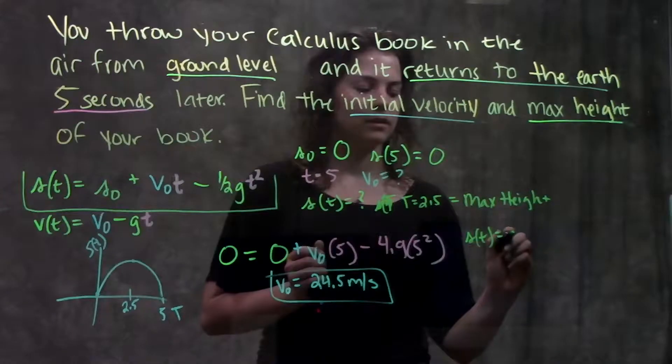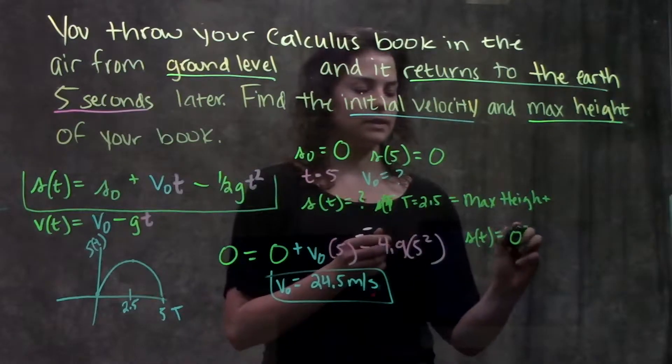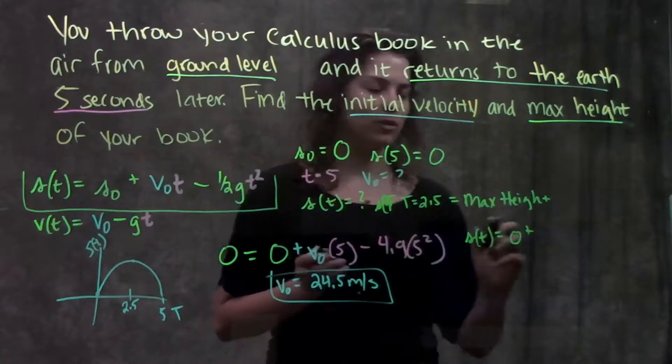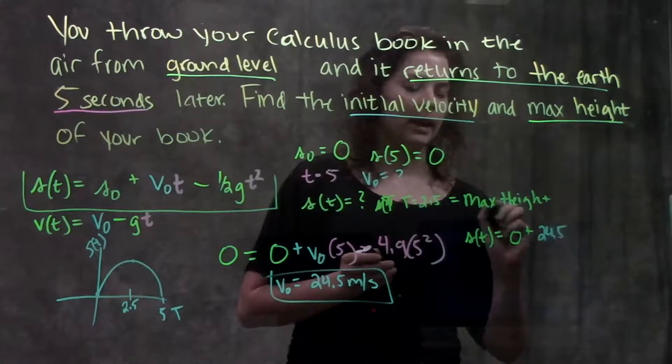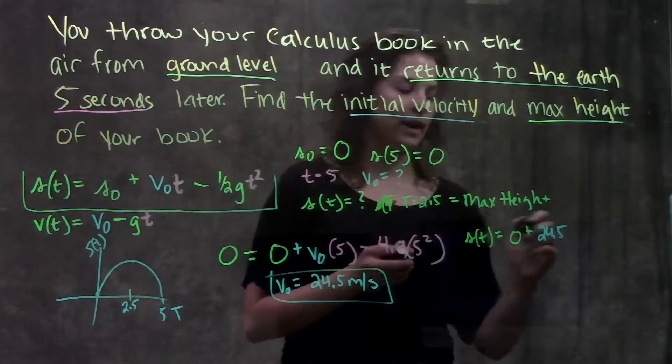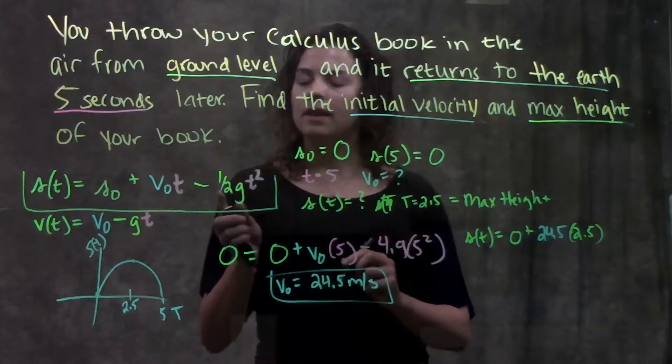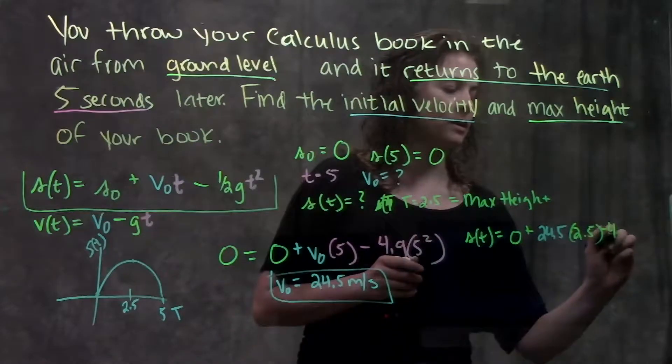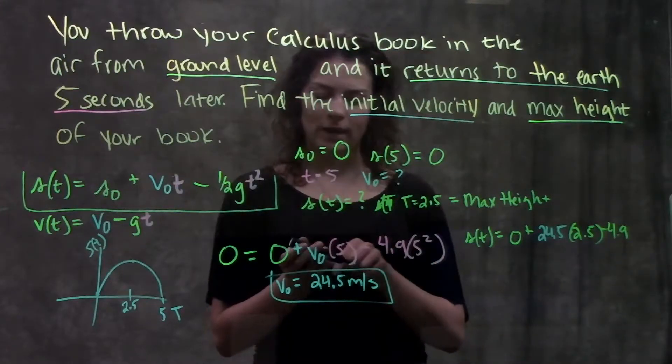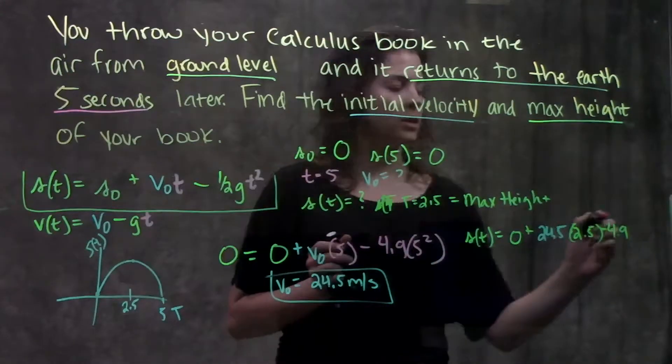My v₀ is 24.5 and my t is 2.5 times 2.5. Then minus one half g, which is minus 4.9 t squared, or 2.5 squared.